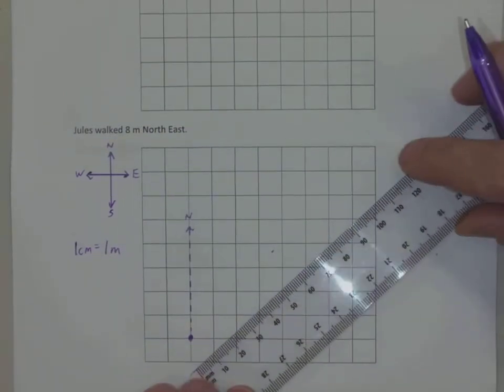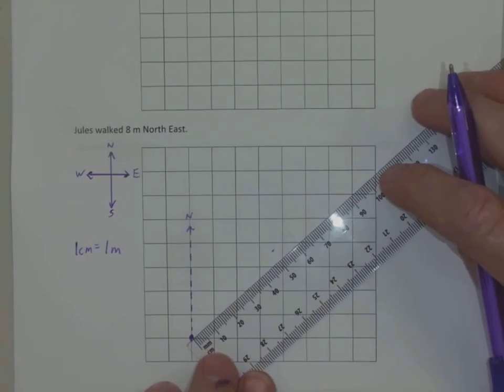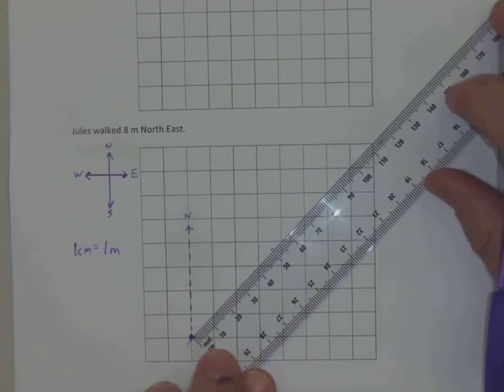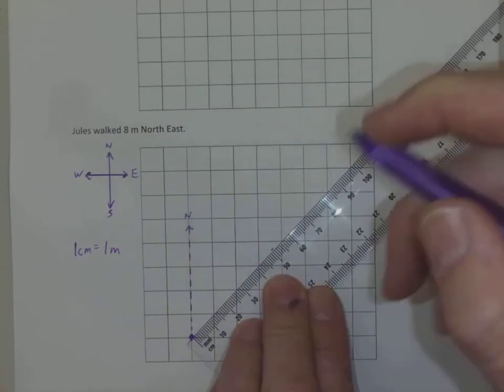Now I take my ruler. I know that I need eight centimeters. So I take my ruler, I line up my two dots, and I go eight centimeters.